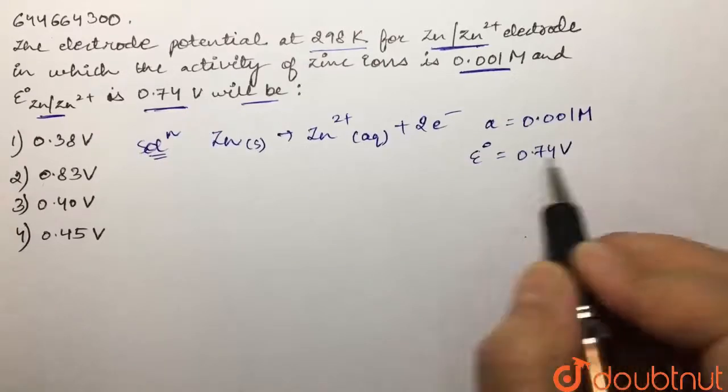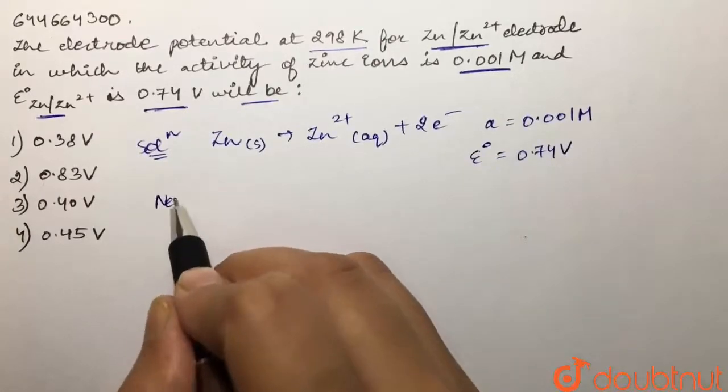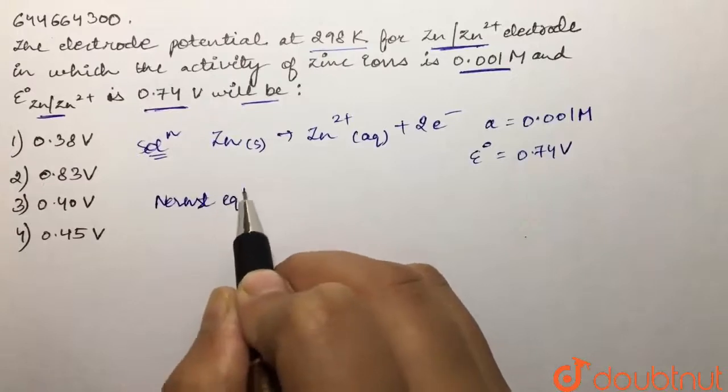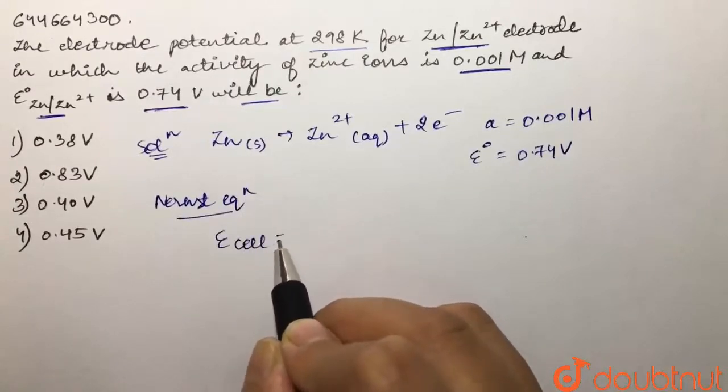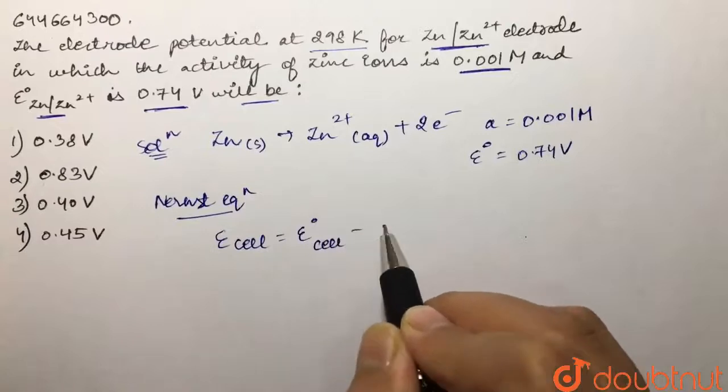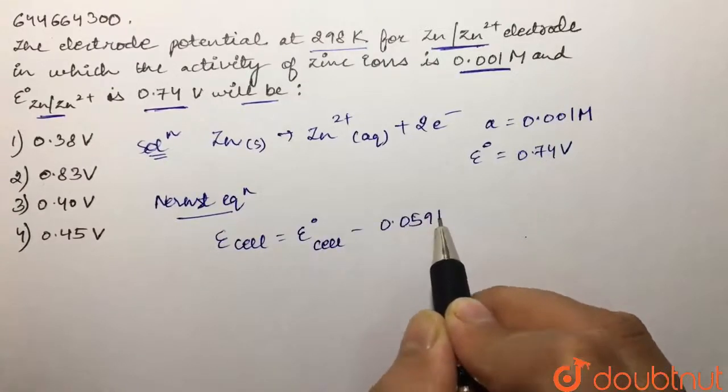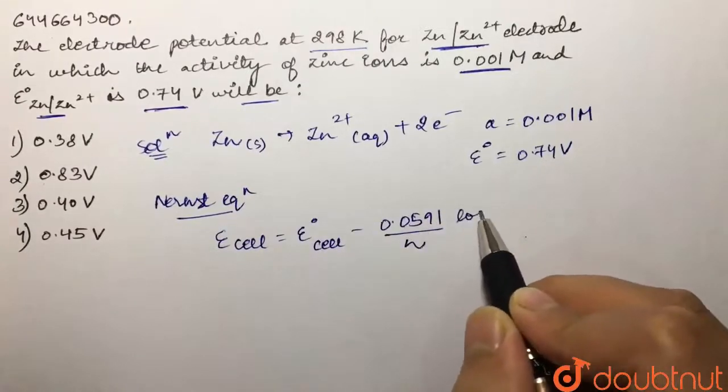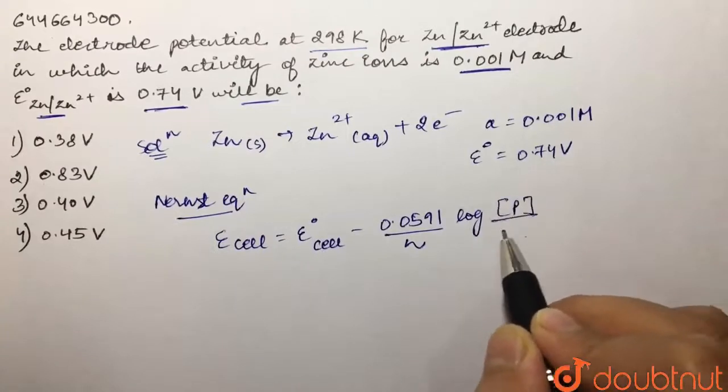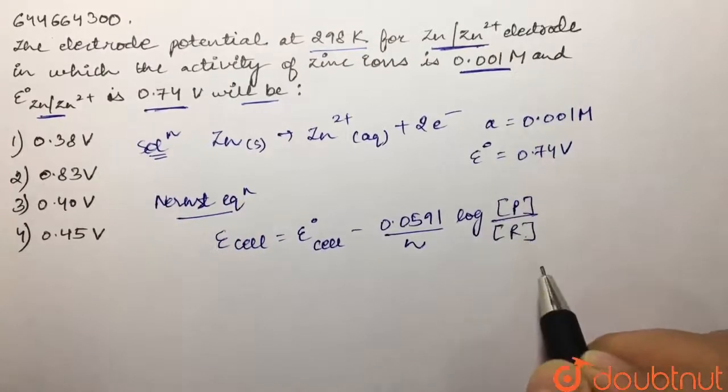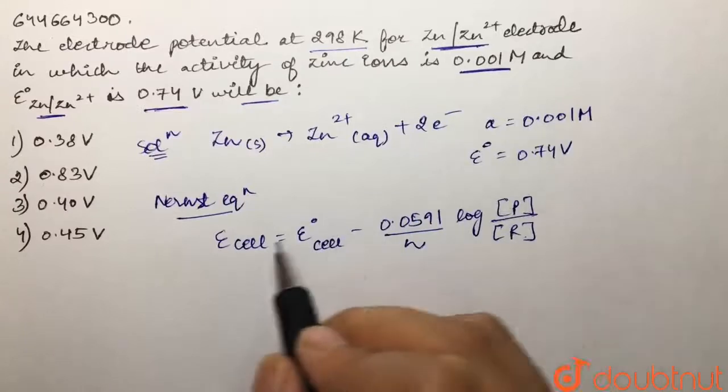We are supposed to calculate E of cell. First of all, we're going to write the Nernst equation for this. What is the Nernst equation? E of cell is equal to E naught of cell minus 0.0591 divided by n, log concentration of our product divided by concentration of our reactants. This is our Nernst equation.